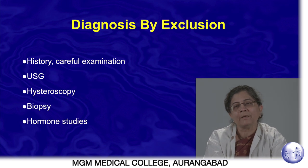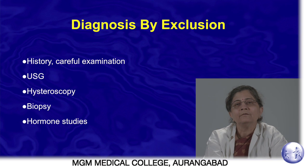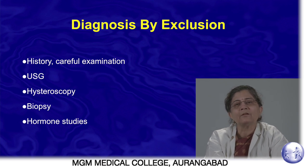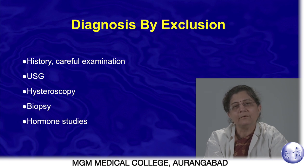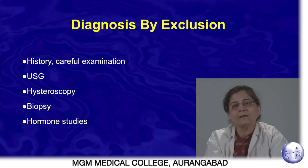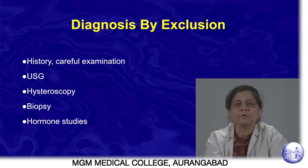The diagnosis of DUB, as per its definition of absence of any obvious clinical pathology, is usually by exclusion. History is very important because patients may be taking hormones from elsewhere and stop them, causing irregular patterns. There may also be pregnancy. Careful examination aims to find any abnormality that would rule out or identify the cause of DUB.